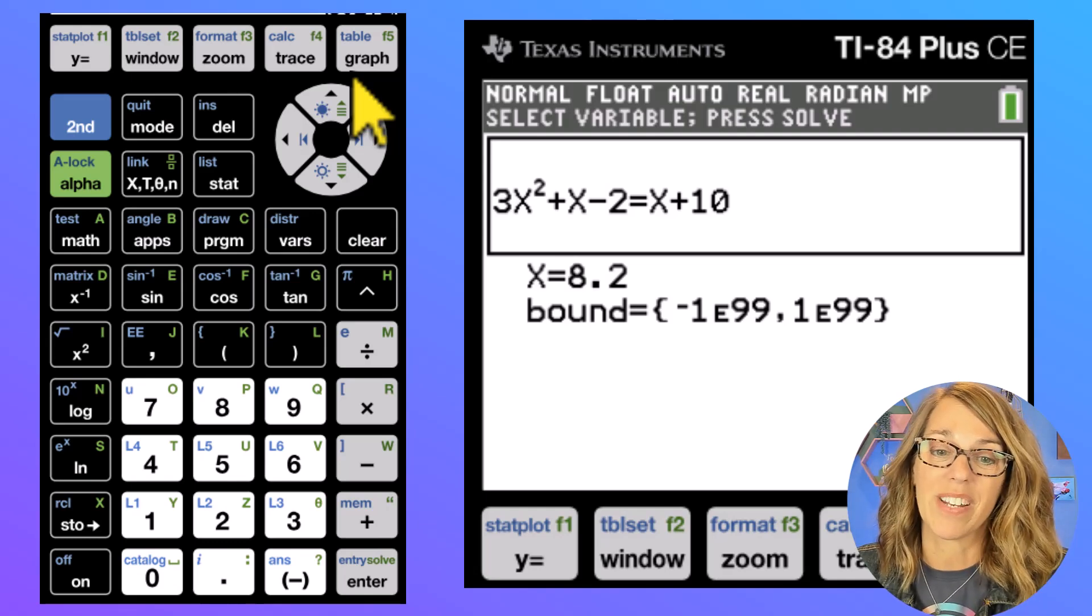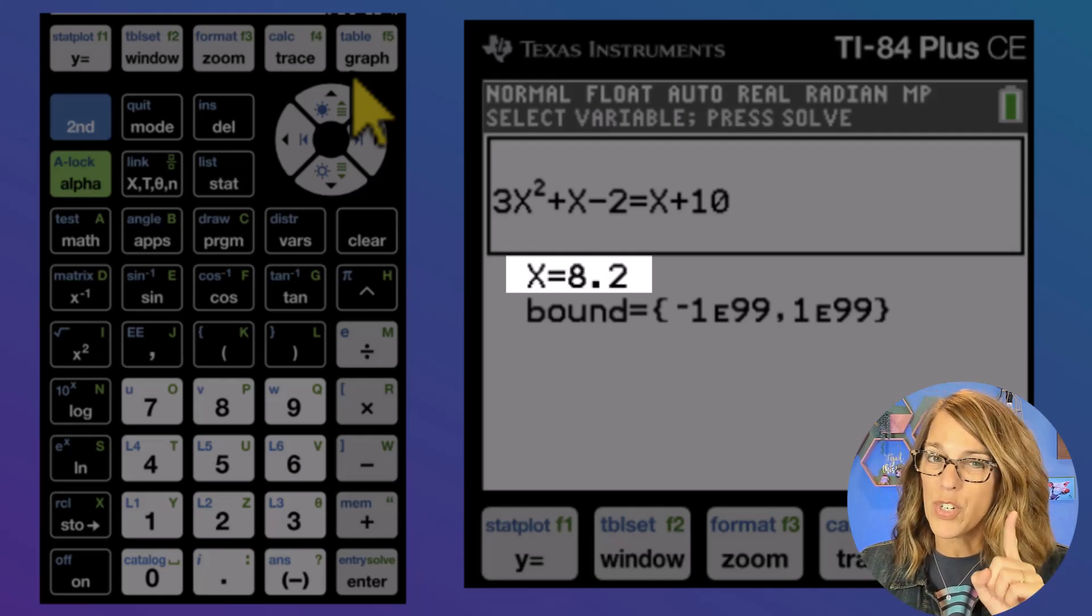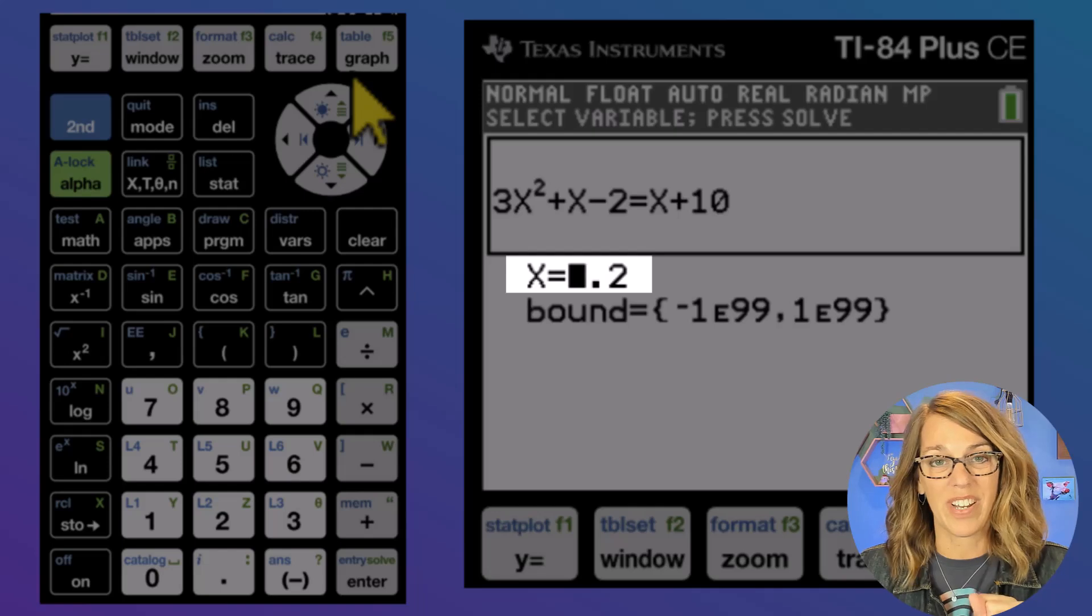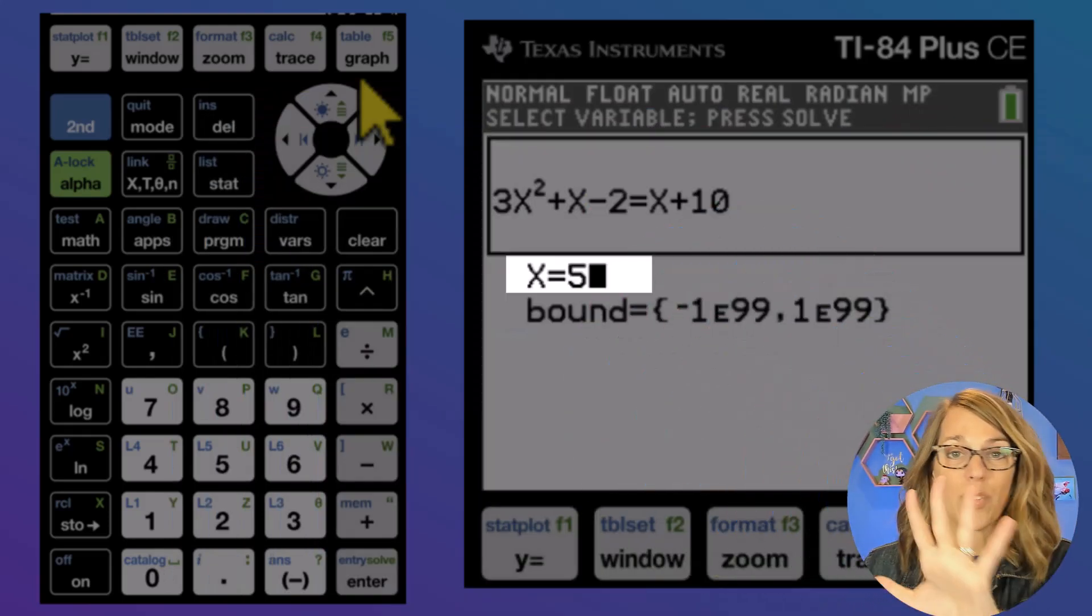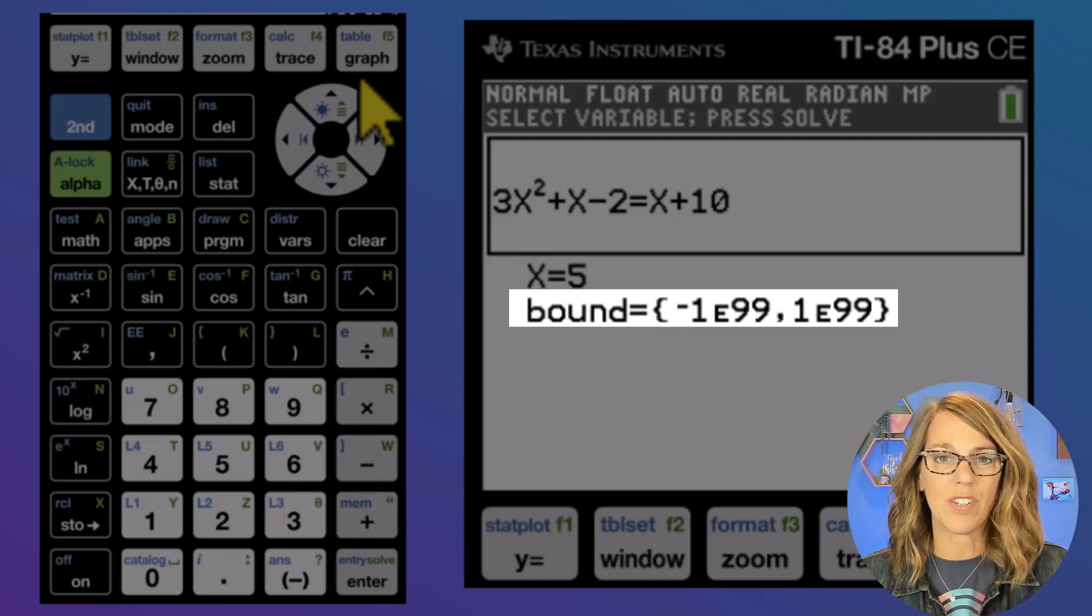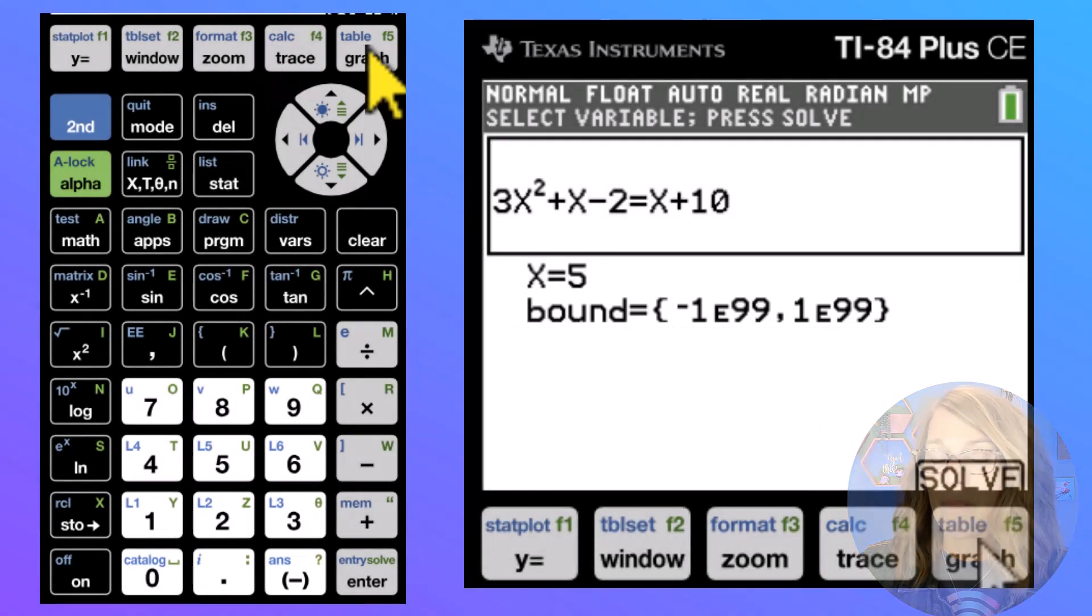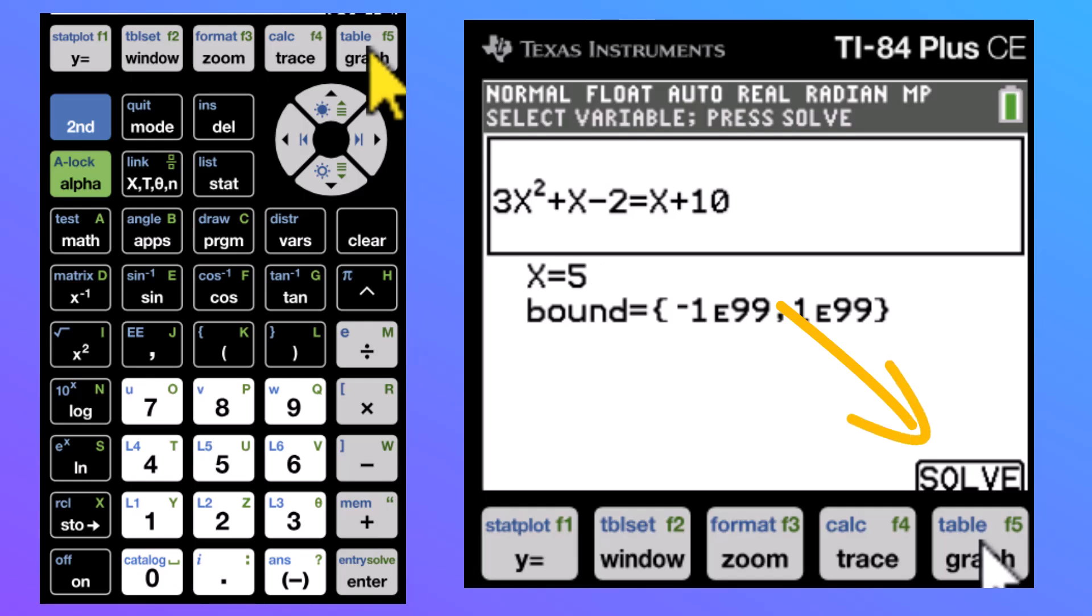Now it's going to ask you for two pieces of information. That first one next to the x is going to be your guess at a solution. This is a degree 2 equation, so I know that there are two solutions. The calculator can only give me one at a time. So my guess is going to allow it to hone in on one of the solutions. Let's just guess 5, totally pick that at random. The next one is the bound. Right now this is basically negative infinity to infinity. I'm going to leave it there so you don't need to worry about the bound. Now that button in the lower right-hand corner of my screen says solve. So I'm going to click the button right below there and my answer is 2. So 2 is one of my solutions.